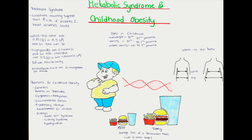The third criterion is a blood pressure over 140/90 mmHg. The fourth point is microalbuminuria over 20 microgram per minute or an albumin-creatinine ratio of over 30 mg per gram.